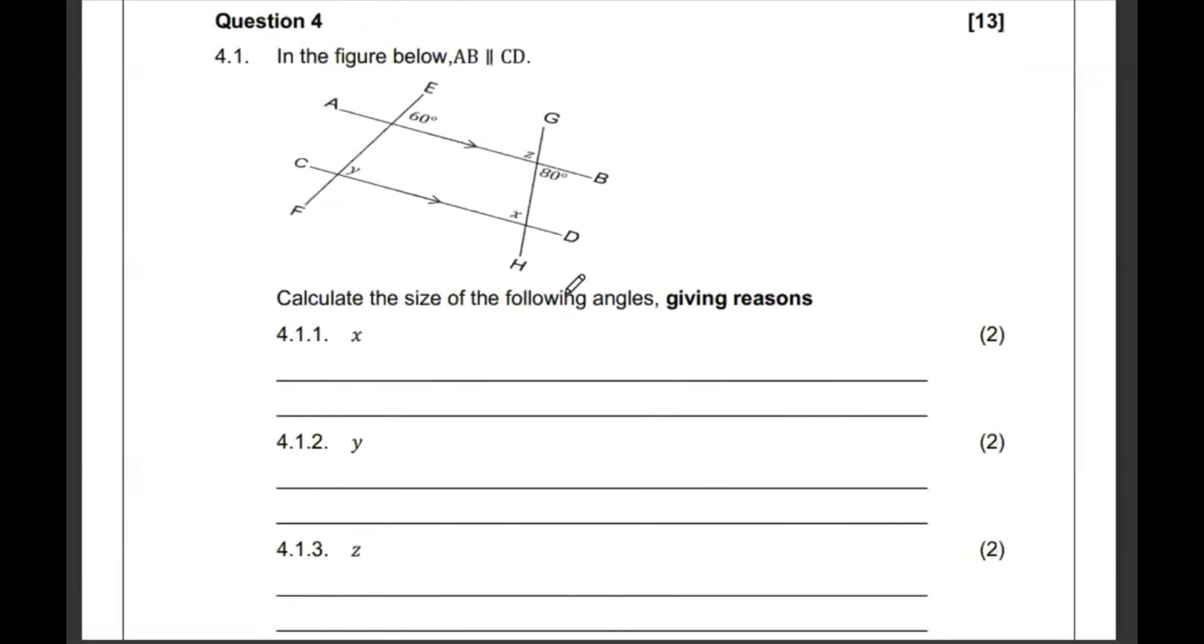Question number 4, which is the geometry. In the figure below, AB is parallel to CD. They want us to get the size of the angles, but we must give reasons. They want us to get x. So, we know that x is going to be the same as 80 because we have the Z or the N. We're saying it's 80 degrees. Those are alternate angles because AB is parallel to CD.